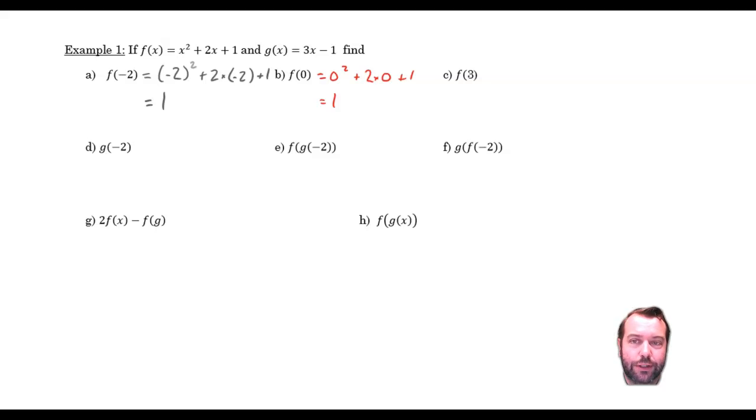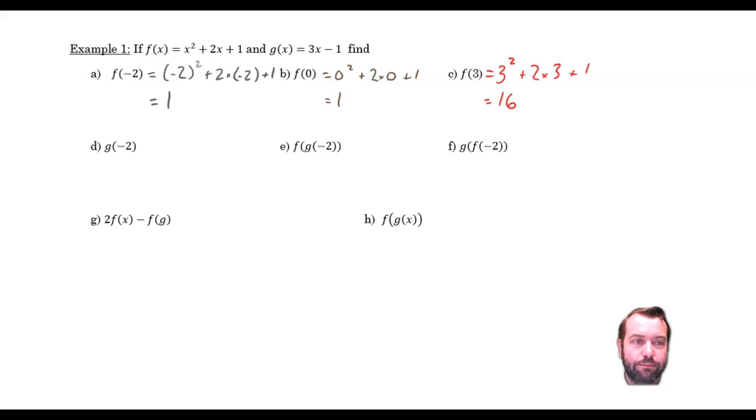Now, function of 3, much the same. We substitute 3 in. 3 squared plus 2 times 3 plus 1 equals 16. There we go. So, there we go. That's using function notation.